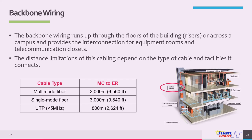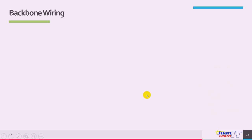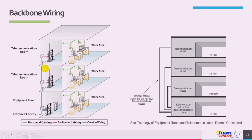Backbone cabling contrasts with horizontal cabling, which connects individual workstations to the network. In the diagram, vertical cabling connects each telecommunication closet on each floor. The recommendation is to use fiber optic cable for backbone cabling. In a typical multi-floor building layout, backbone cabling interconnects telecommunication closets, which are connected to the equipment room.